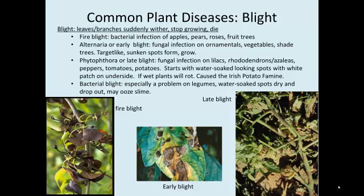Some common diseases: blight — it's called blight because the plants look pretty miserable. Fire blight is a bacterial infection that causes a lot of agricultural damage to our fruit trees. There are also some fungal blights. They're generally called blight because they happen quickly — the plant fails very quickly. They are often the source of conditions where you need to just put the plant in a different place and plant something different there.